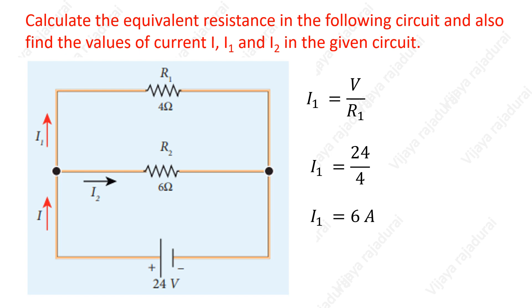Next, we calculate I2 value. So, I2 is equal to V by R2. Again, potential difference is constant here. We use 24 volt. R2 value is 6 ohm. So, I2 value is 4 amperes.